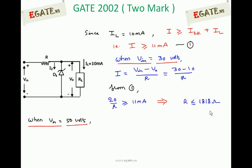Case 2: when Vin = 50V. The current flowing through resistor R is (Vin - V0)/R = (50 - 10)/R = 40/R. From equation 1, I ≥ 11mA, so 40/R ≥ 11mA. So R ≤ 3636Ω.